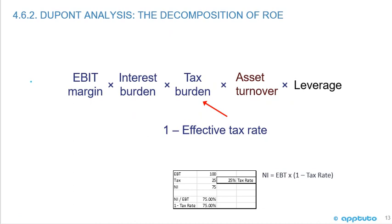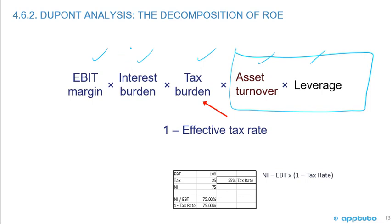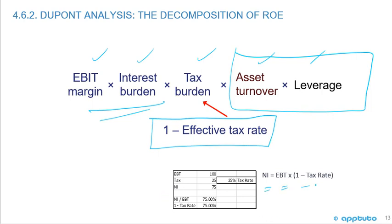The final slide: the bottom row of the pyramid is EBIT margin times interest burden times tax burden times asset turnover times leverage. The tax burden equals one minus the effective tax rate. For example, if earnings before tax = 100, tax = 25, then net income = 75 and the tax rate is 25%. Net income over EBT = 75%, which equals one minus the 25% tax rate. That's the last slide for this LOS. Thank you.